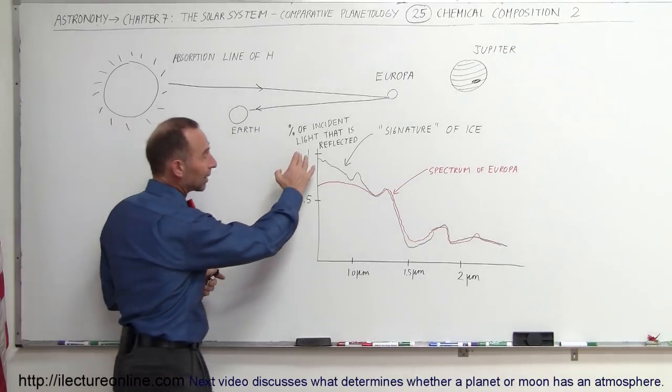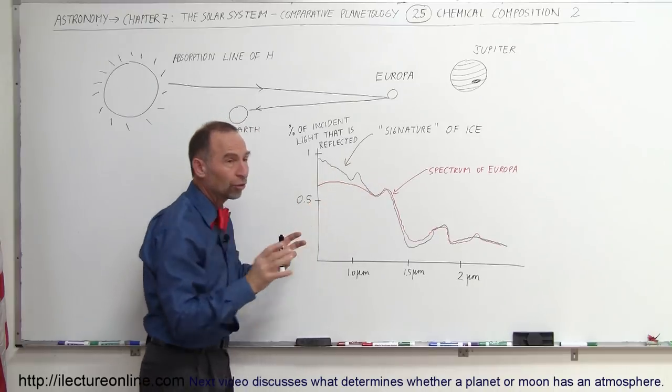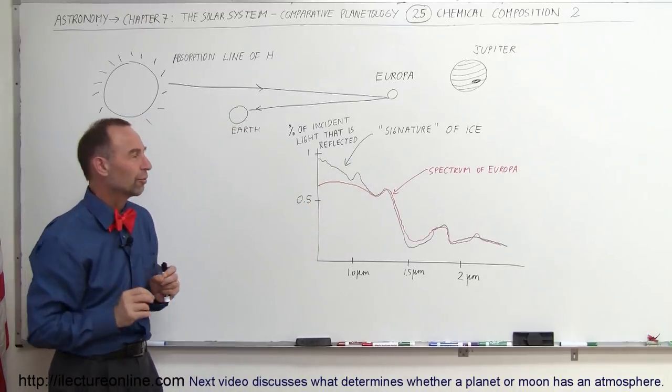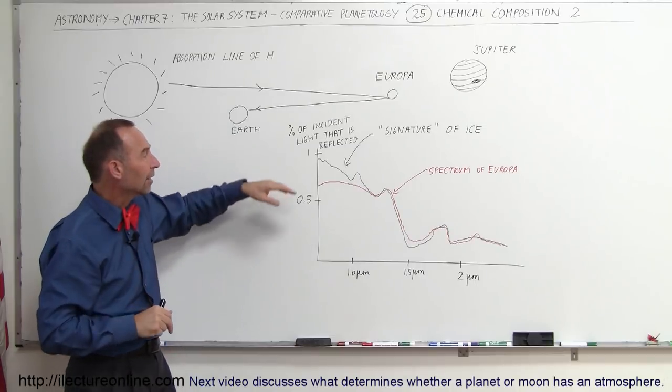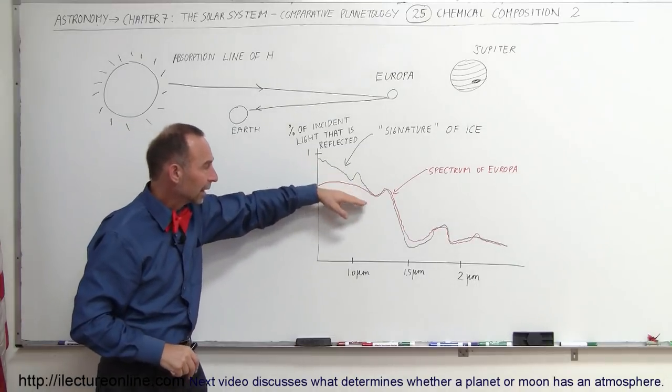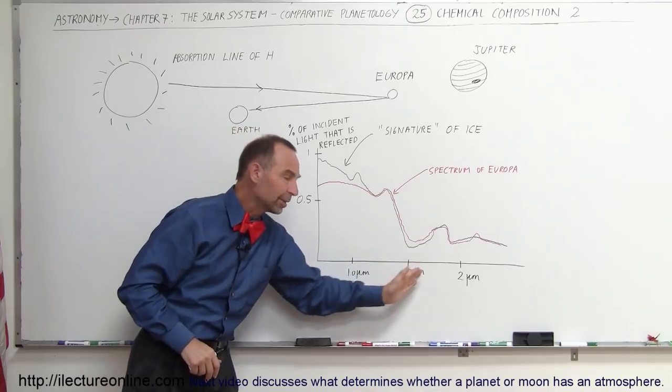notice that the black line represents what we would call the spectral signature of ice. You can see that if you shine sunlight on the ice, you get a reflection that kind of looks like this, according to these particular wavelengths.